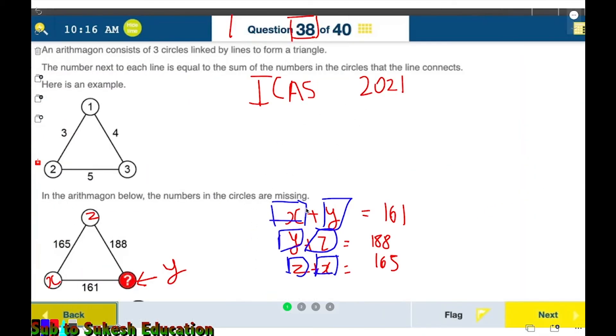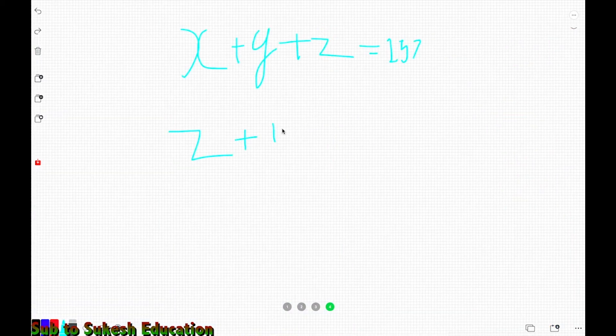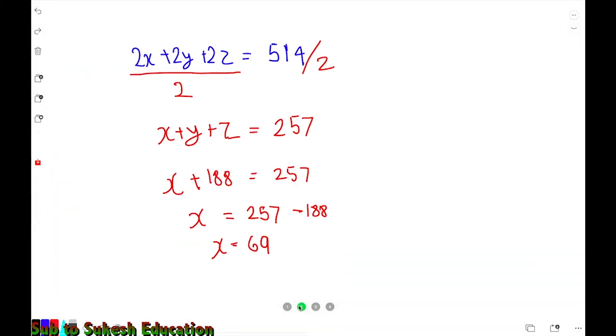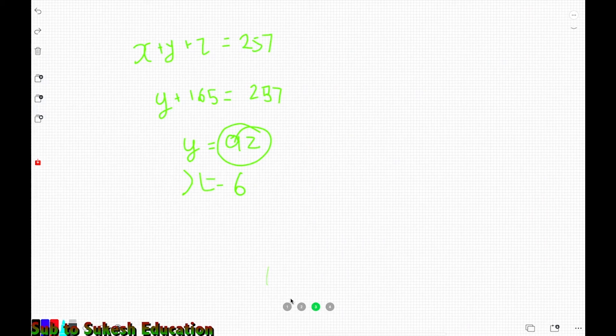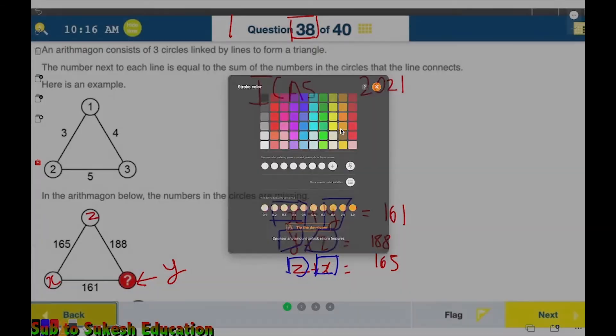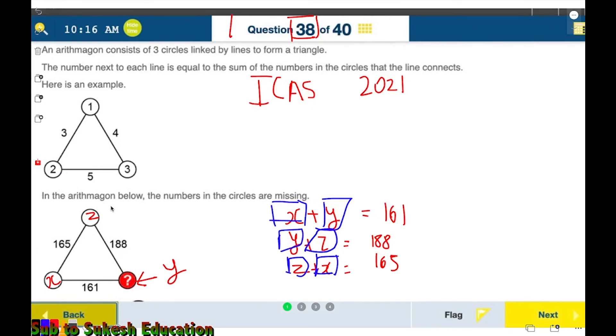X plus y is 161, so you substitute 161 in. Z plus 161 equals 257, so z equals 257 minus 161, which is 96. That's how we find z, x, and y all together. So this is 96, this is 92, and this is 69.